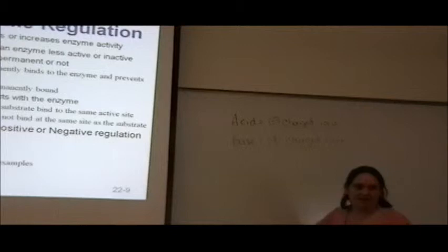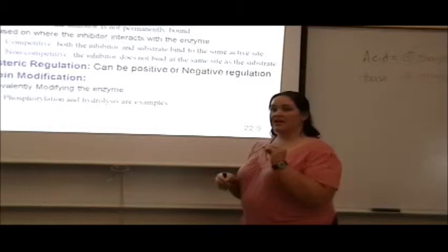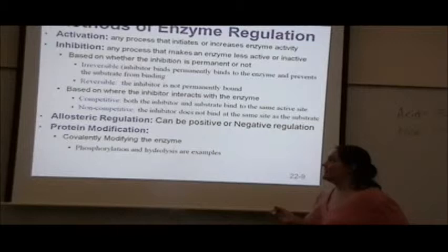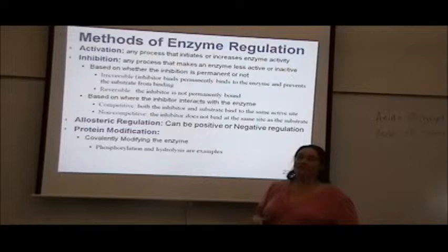When regulating an enzyme, you can do one of two things: turn it on or turn it off. Turning it on or making it more active is called activation. Turning it off or making it less active is called inhibition. Simply put: on or off.